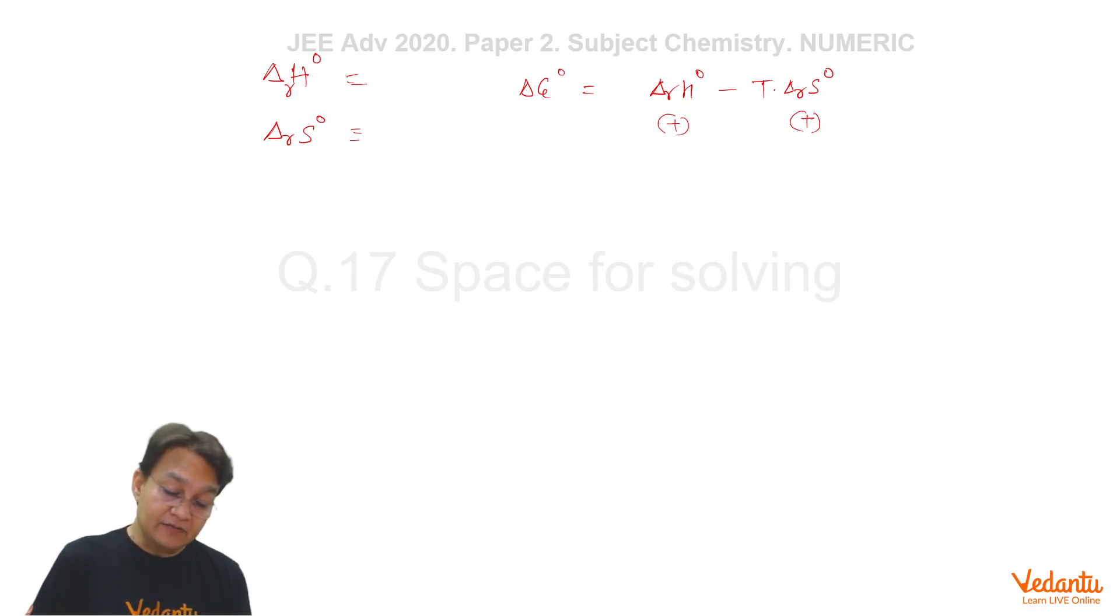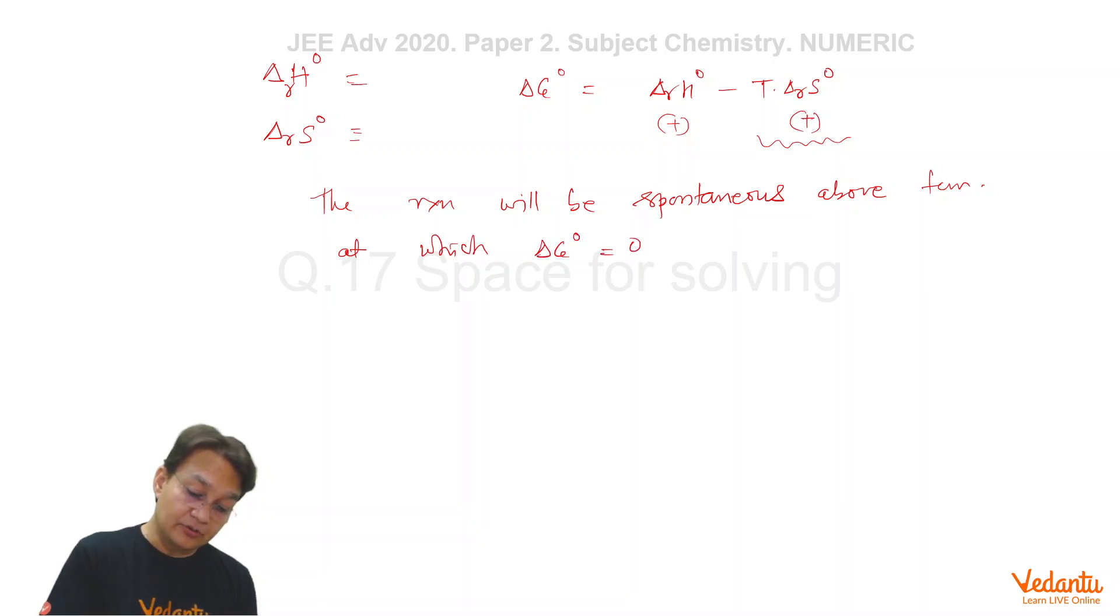Which means if you increase the temperature, this term will become more and more negative. At sufficiently high temperature, delta G0 will be negative. That means the reaction will be spontaneous above the temperature at which delta RG0 equals 0.